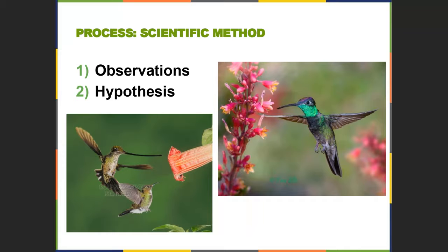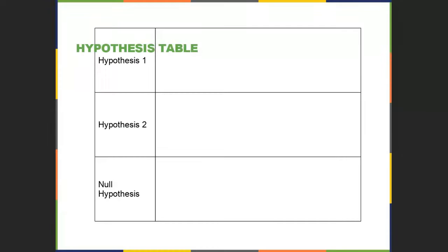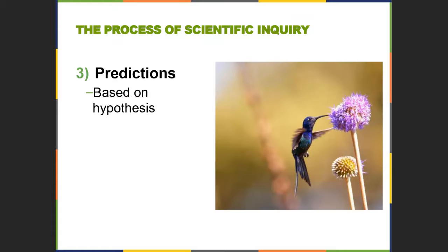The scientific process is about making observations first — what's going on, what do you see, what's the problem, what are the constraints of whatever issue you're working with. Then you formulate a hypothesis that might solve the problem, might provide a solution. And then, like we did, we came up with several different hypotheses.